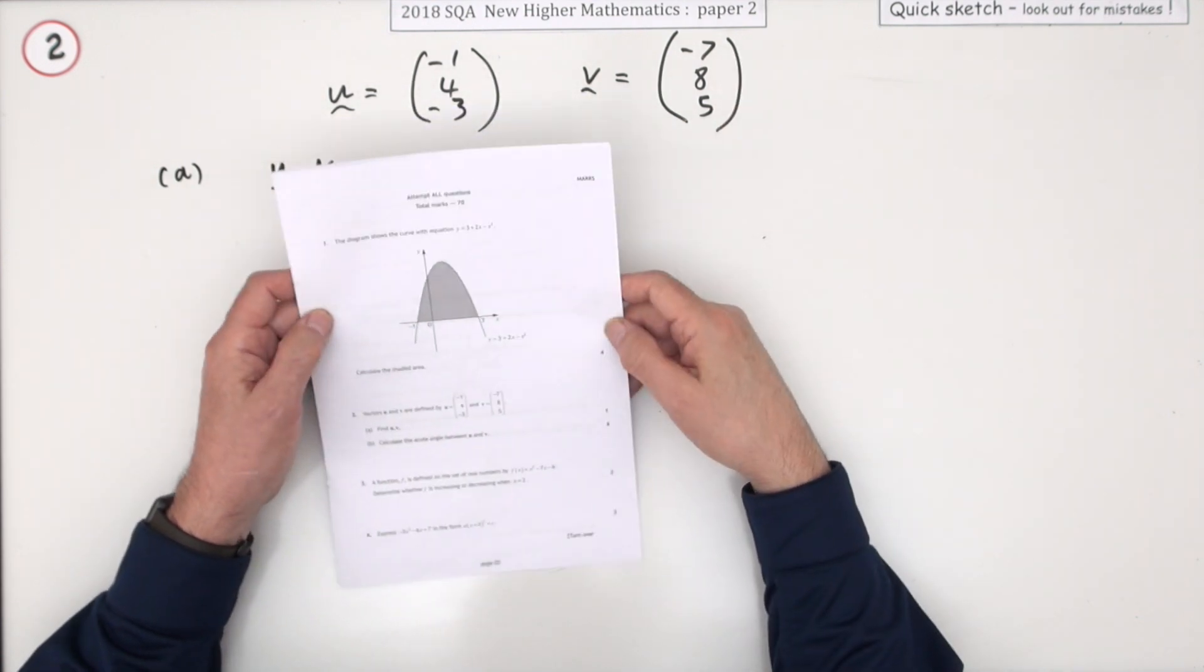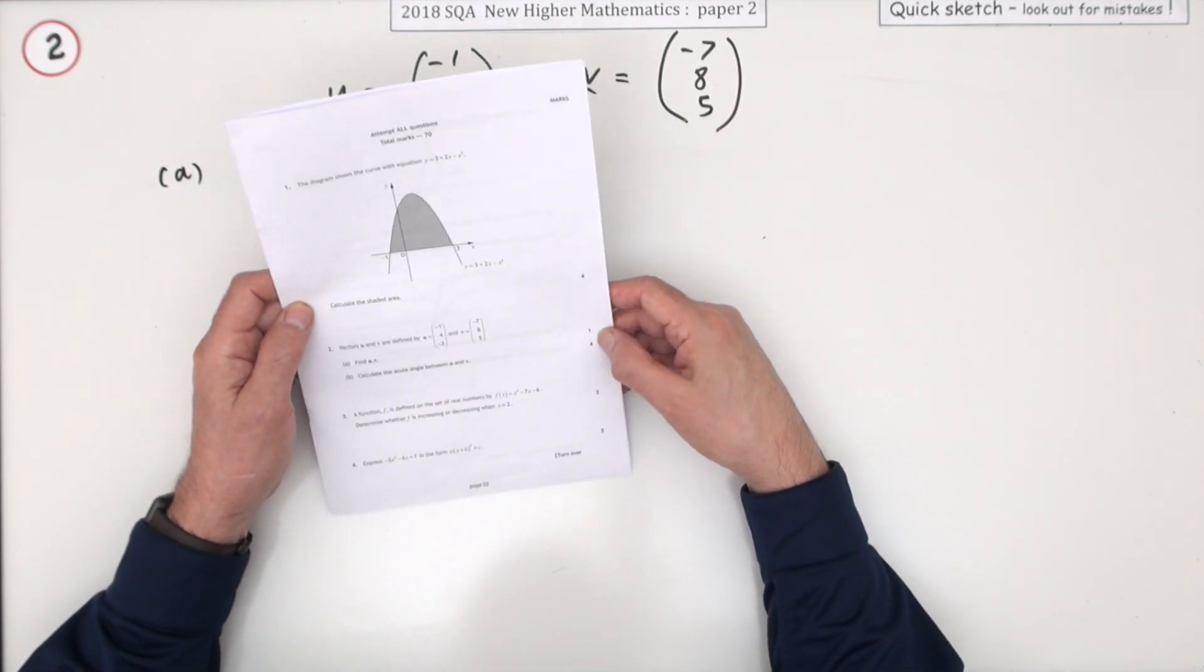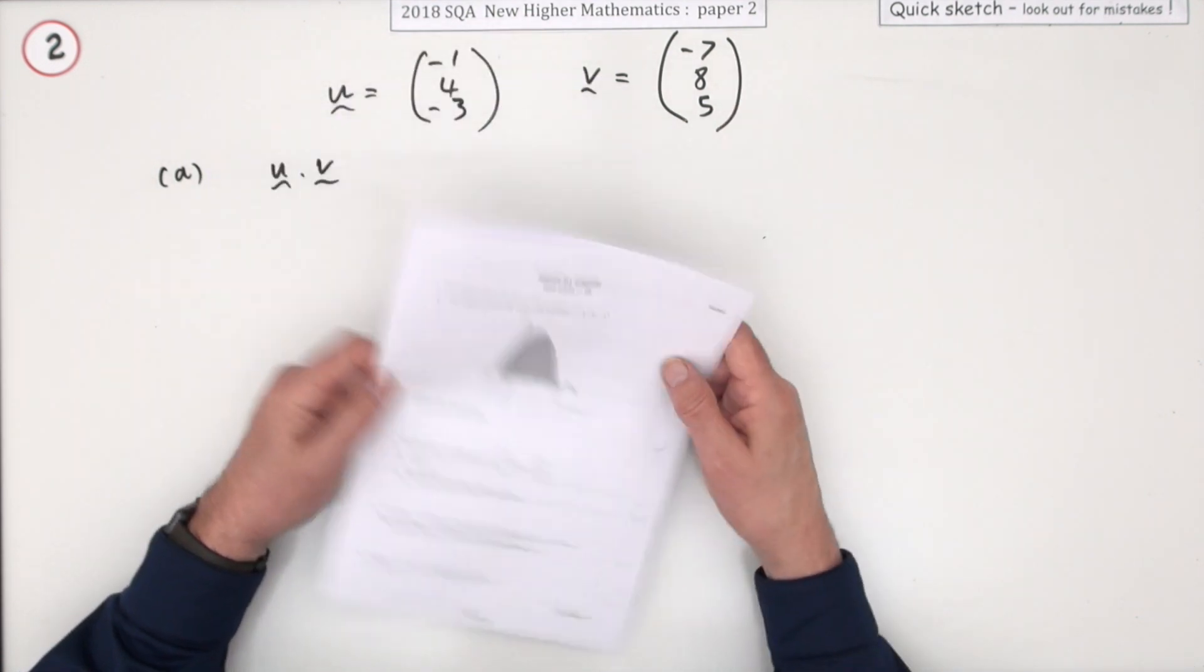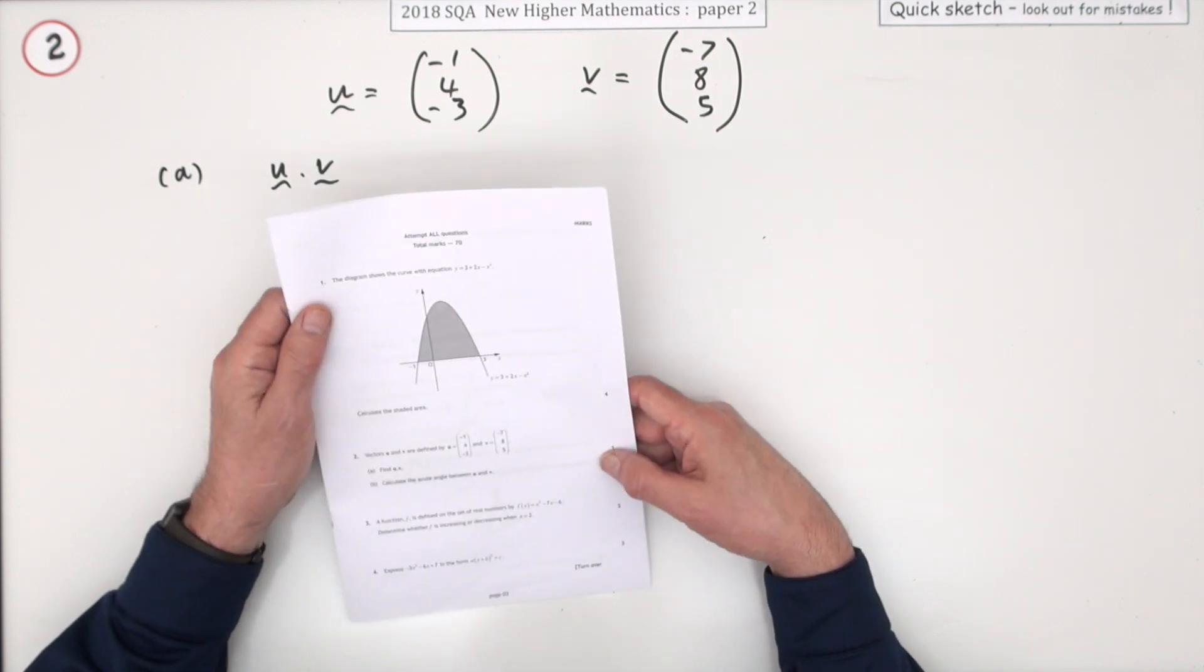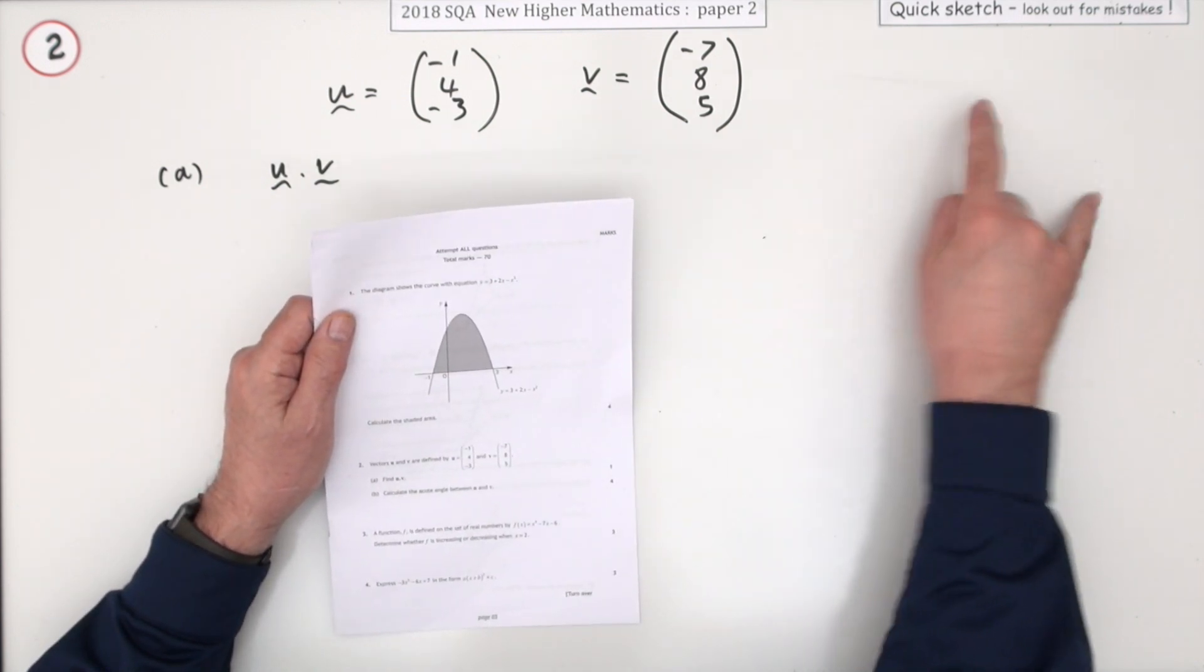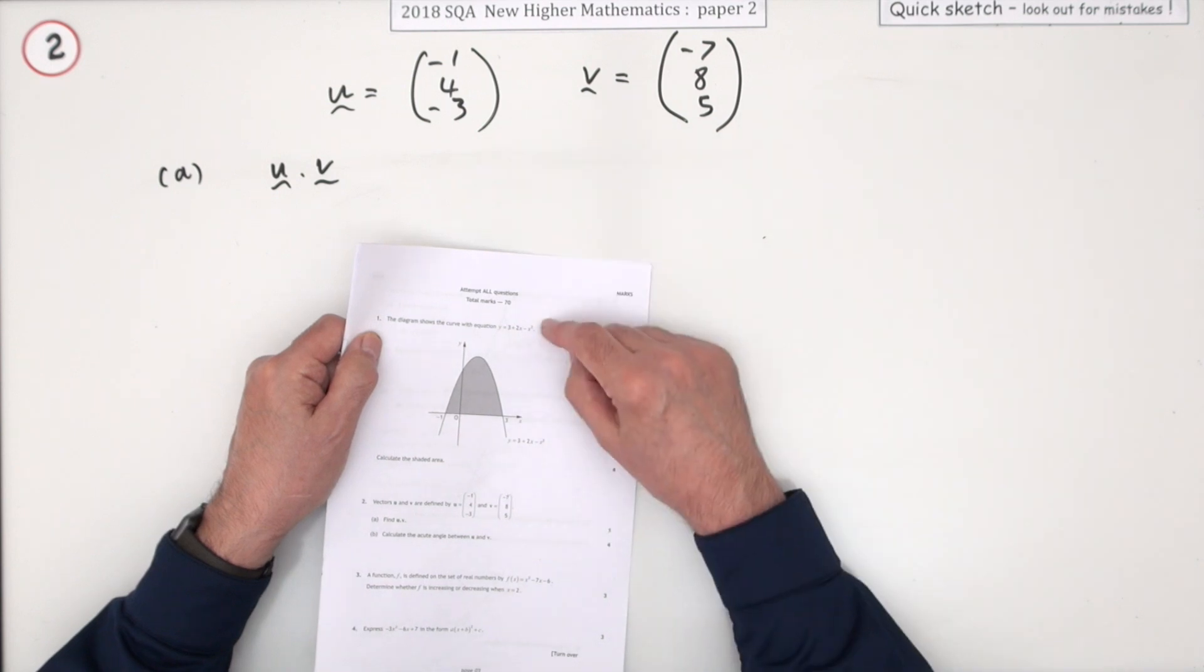Number two from paper two of the 2018 higher maths, five marks for finding the angle between two vectors. Usually expect a bit more - you'd expect a nice diagram, find a couple of points, actually find these vectors. Those are more marks, then get the angle. Let's just get the angle first.